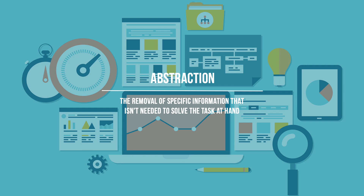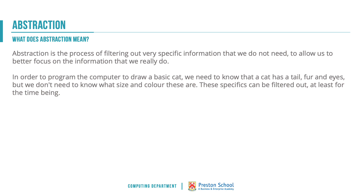The second cornerstone of computational thinking is abstraction. Abstraction means the removal of specific information that we don't need to solve the task right now — that doesn't mean it's pointless information, just information we're not going to worry about at this moment. For example, if we were teaching a very young child to draw a cat, we would worry about the tail, fur, eyes, and head, but we probably wouldn't worry about the exact size and exact colour of each of those — we could filter those out in the early part of the learning journey.